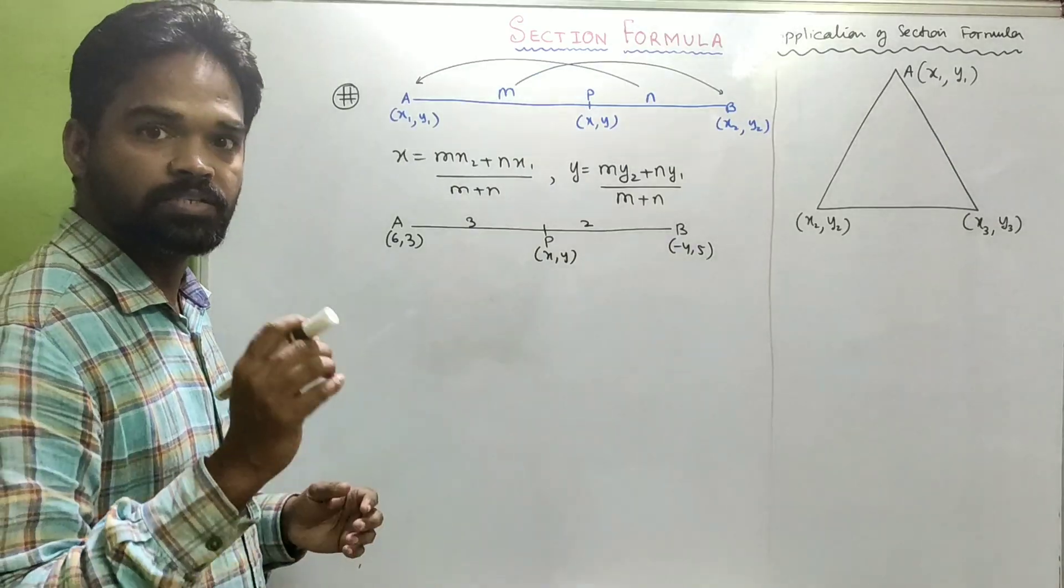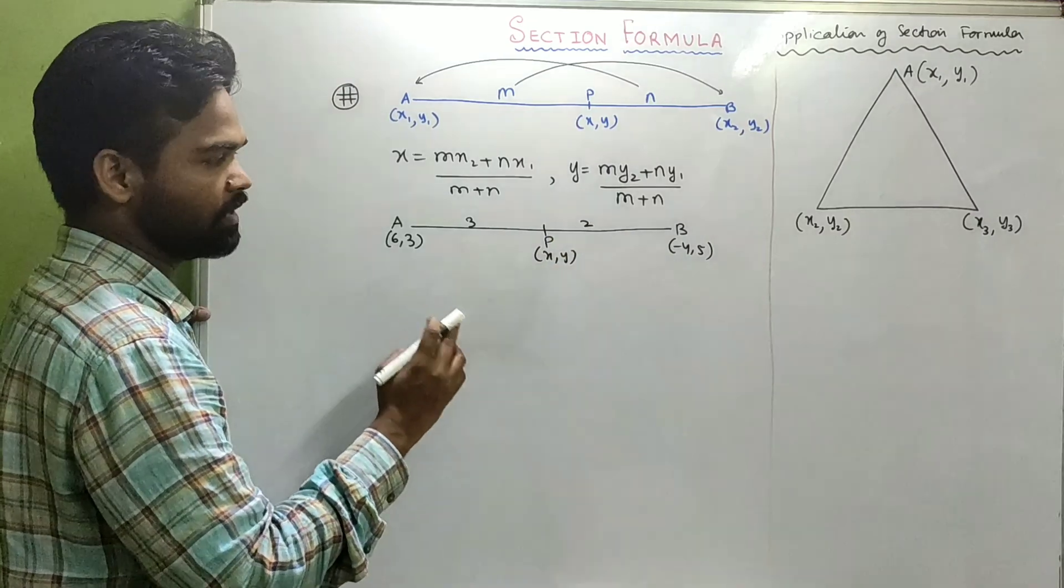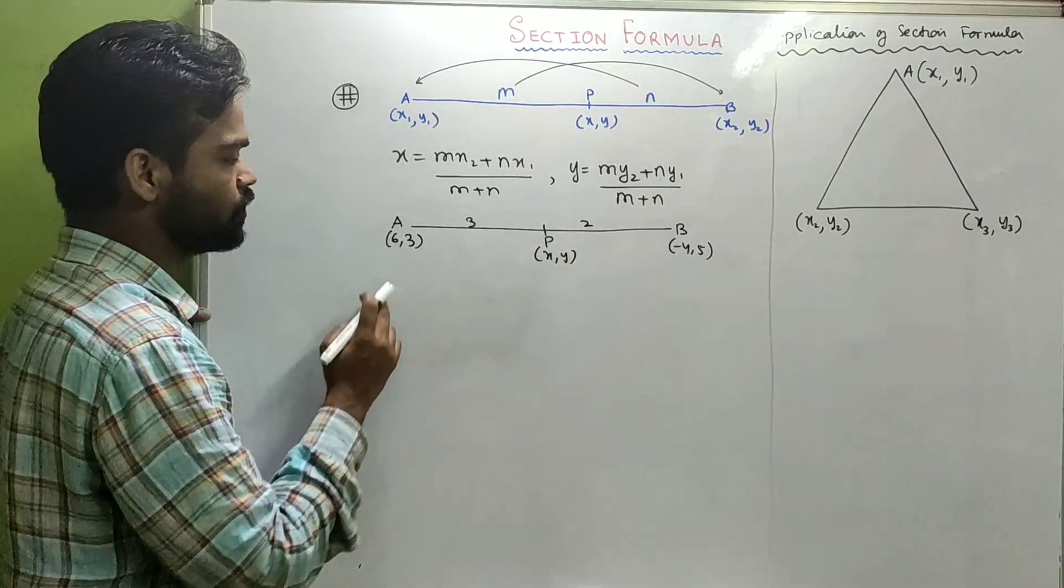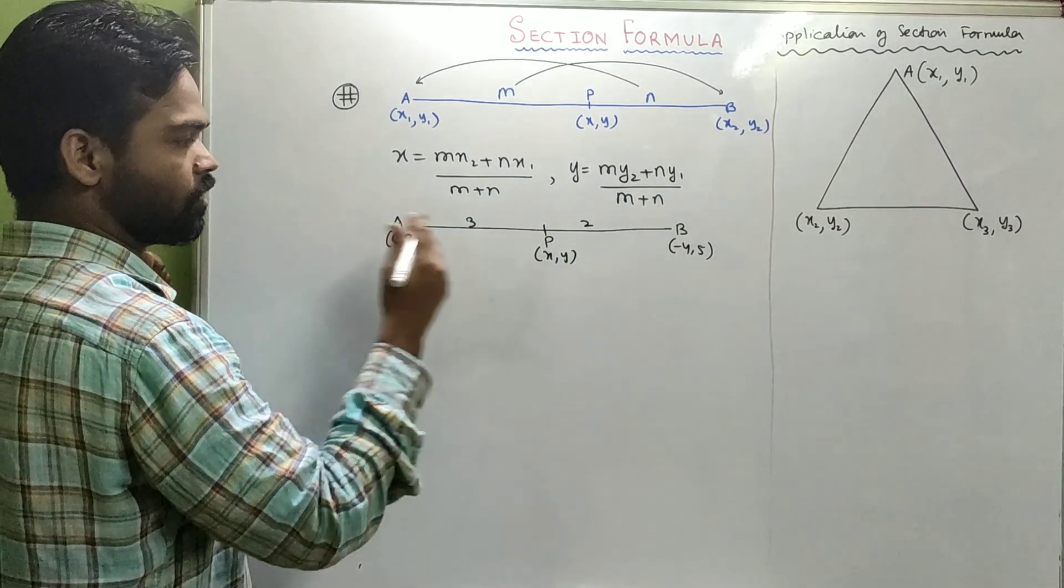Clear? Suppose we take an example. Suppose we take AB, a line segment, divided by P in the ratio of 3 is to 2. A is (6, 3), B is (-4, 5). Then what will be the coordinate of P?